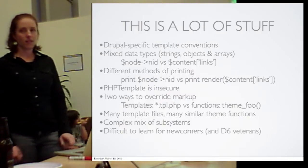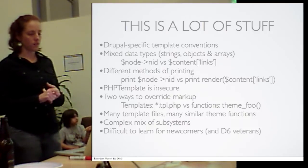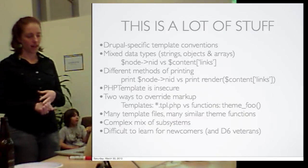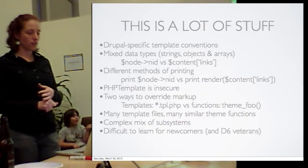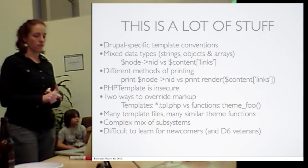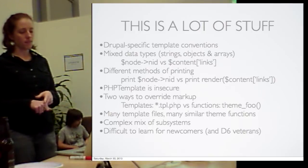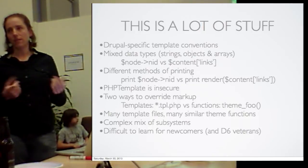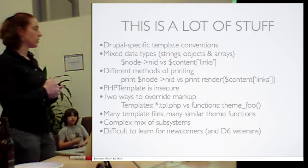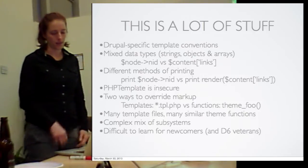So these are the problems we discovered in Drupal 7: Drupal-specific template conventions, mixed data types in templates, different methods of printing, PHP template being insecure, two ways to override markup, way too many versions of things you can override, and a complex mix of subsystems. All of these add up to a theme system that's too hard to learn. We're going to talk about our approach to solving these problems in Drupal 8.